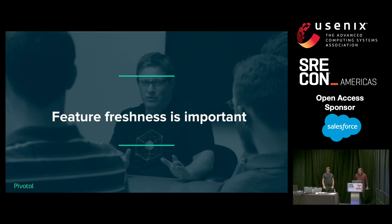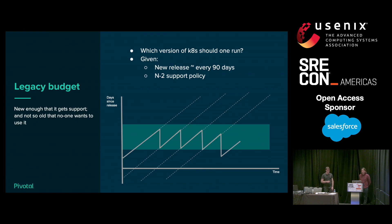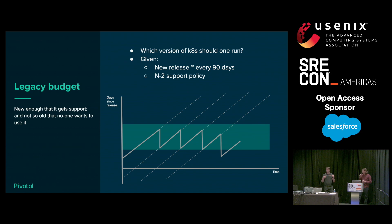Hopefully we've convinced you that here's at least one way we can use the same mechanics as availability to monitor something else of value in operating a platform: security. What about feature freshness? What about that Lexus that Jim's so keen on?